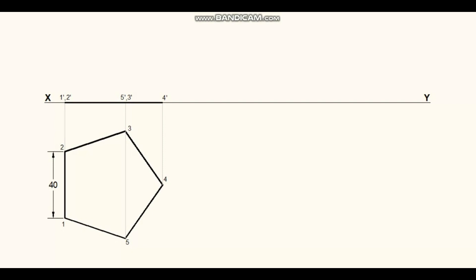Since the pentagonal lamina is inclined to HP, in the second stage, this elevation should be tilted for the given angle with all the points on it. Project all the points from this elevation and all the points from the first stage plan. Mark the corresponding intersection of points. Join these points with straight lines.